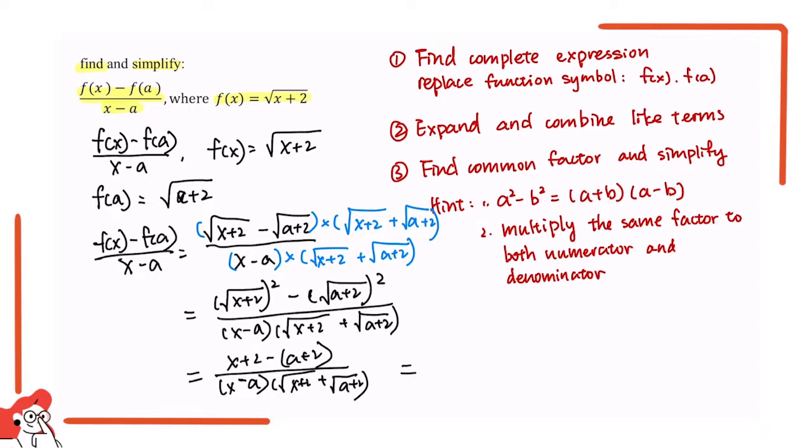And now you can combine the like terms on the top and we will get, since it is plus 2, so it is minus 2. So we will have x minus a on the top and x minus a times the sum of the square roots.